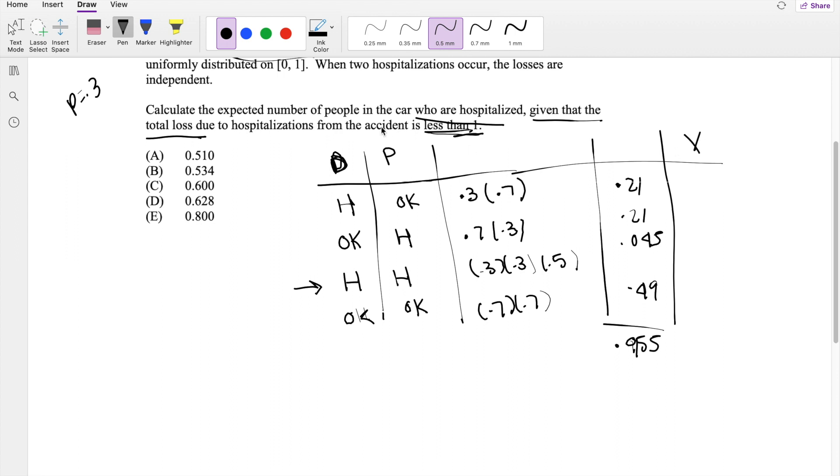And what is the X value? Well, X value is the number of people who are hospitalized. So how many people are hospitalized in scenario 1? Well, that's 1. Likewise, it's going to be 1 for this one. There's 2 people hospitalized for this scenario, and then there's 0 people hospitalized for that scenario.